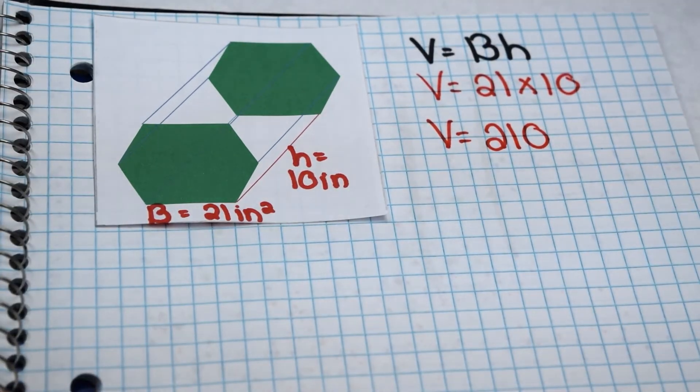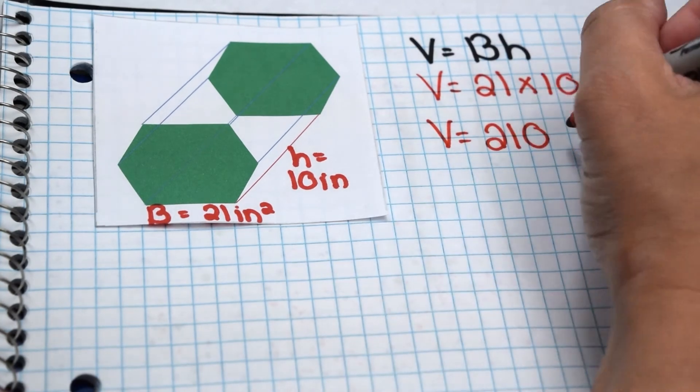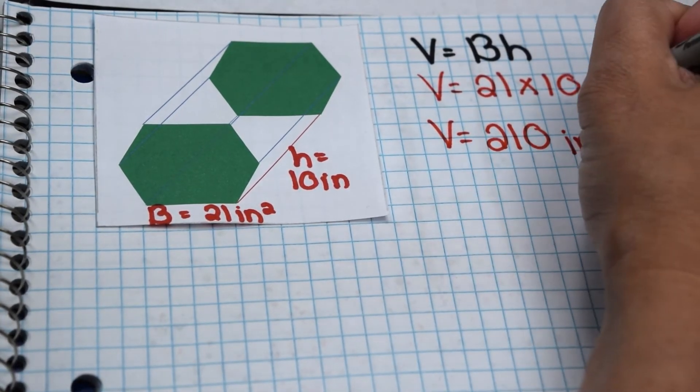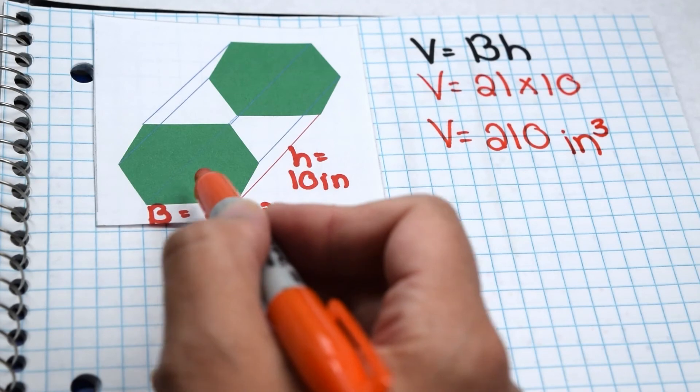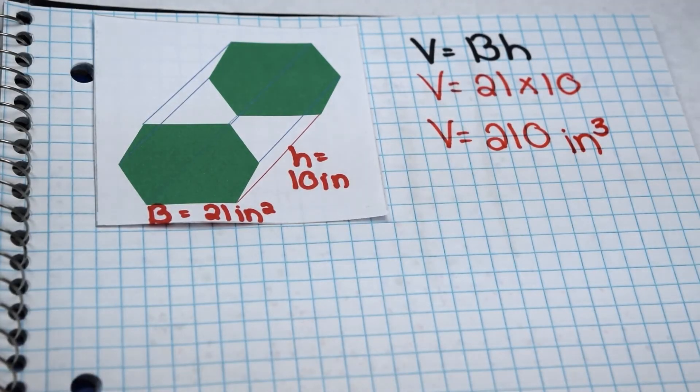And then we need to label it. Since our dimensions over here are labeled in inches, this is labeled in inches. Volume is a three-dimensional measurement, so it's labeled to the third power. So the volume of our hexagonal prism is 210 cubic inches.